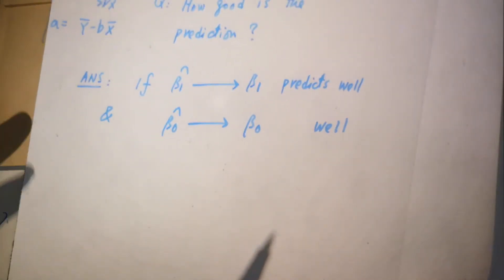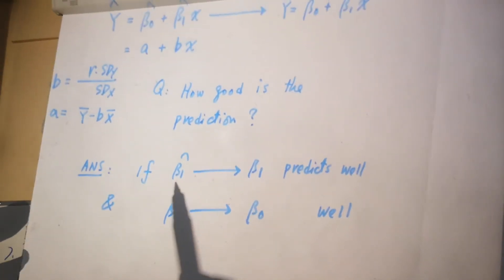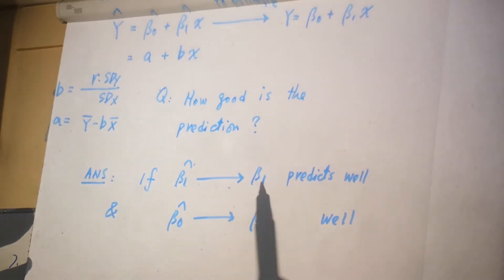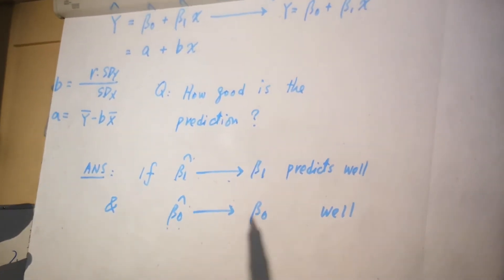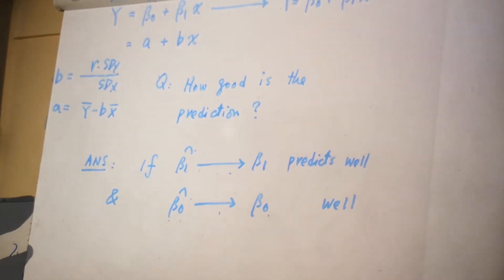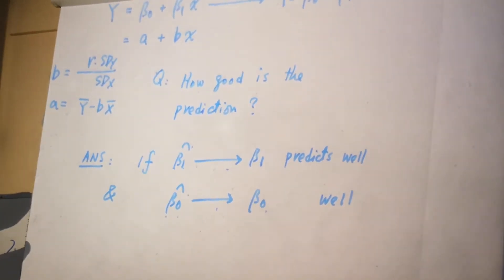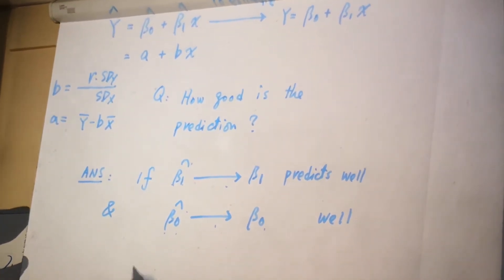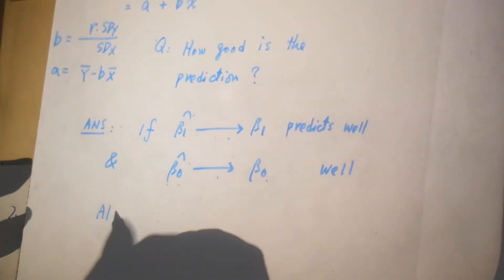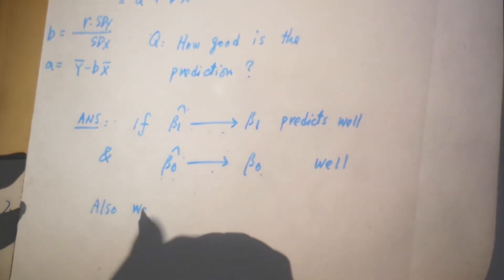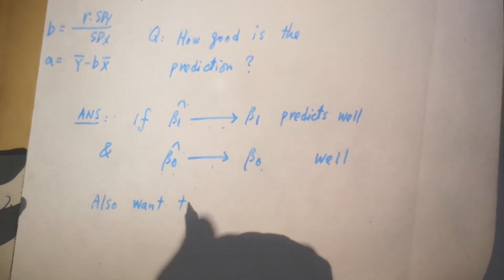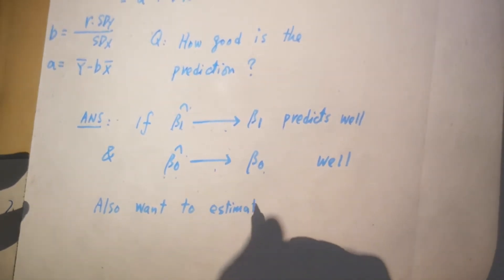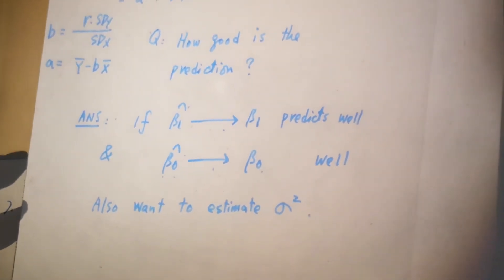To answer the question, other than β̂₁ predicting β₁ and β̂₀ predicting β₀, you need to also estimate the size of σ².